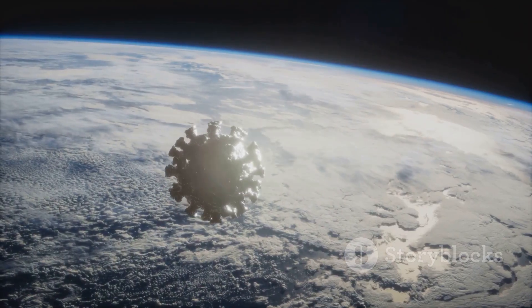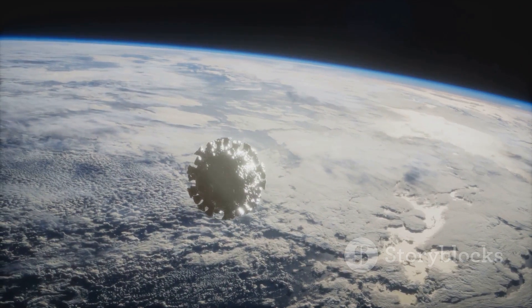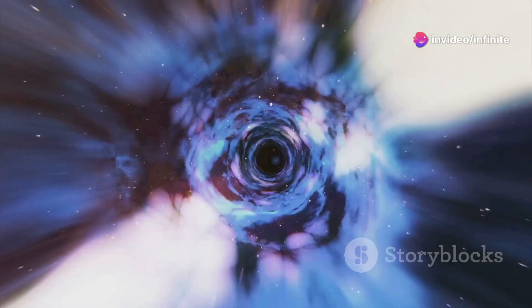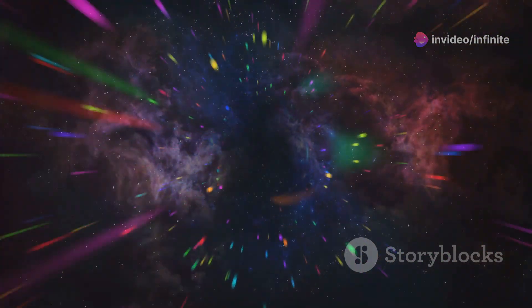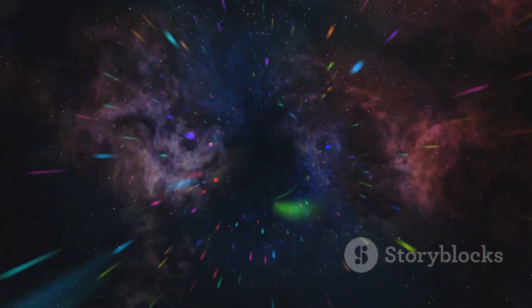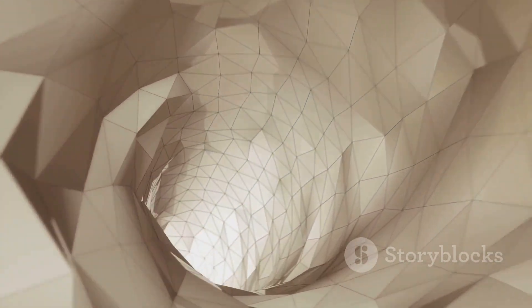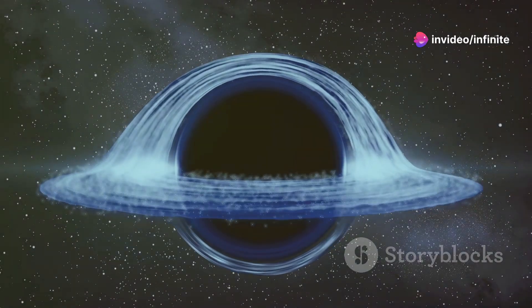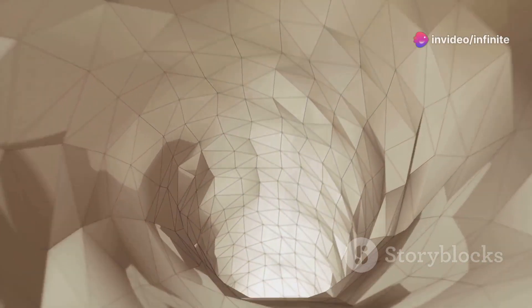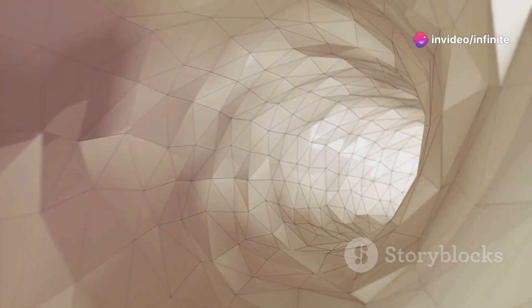Imagine traveling to a distant galaxy far, far away. Instead of spending millions of years on a spaceship, what if you could take a shortcut? This is where wormholes come in. Wormholes are theoretical tunnels that could connect two different points in space-time. Think of them as cosmic shortcuts. While wormholes are still purely theoretical, they arise from Einstein's theory of general relativity. This theory suggests that massive objects warp space-time, and under certain conditions, these warps could create tunnels or shortcuts. In theory, a wormhole could connect two distant points in space or even two different points in time.